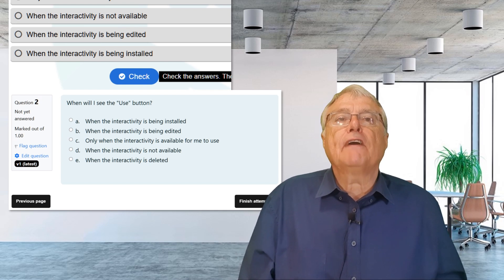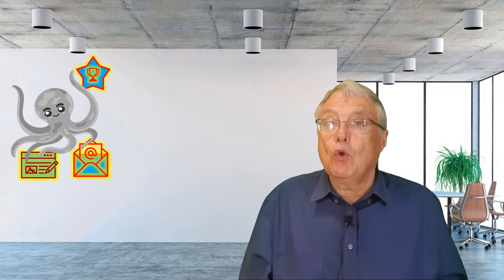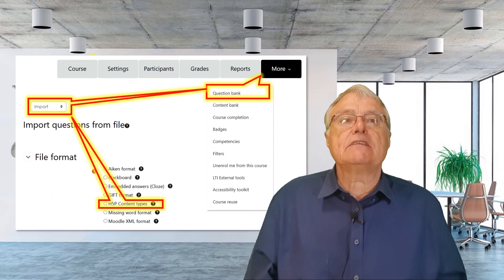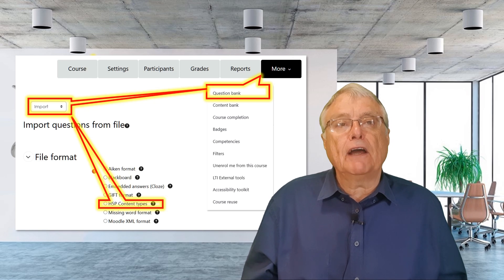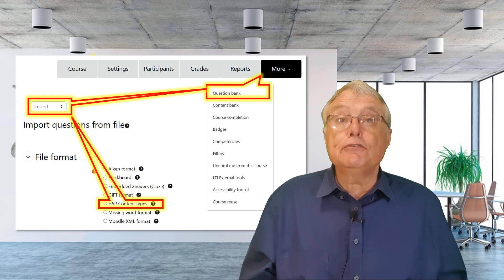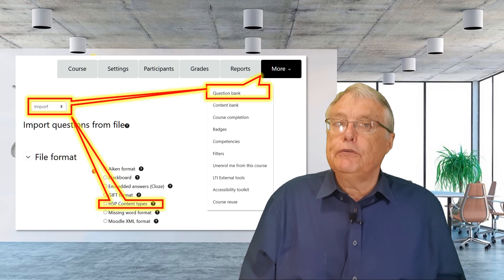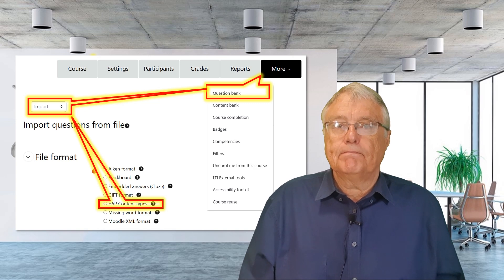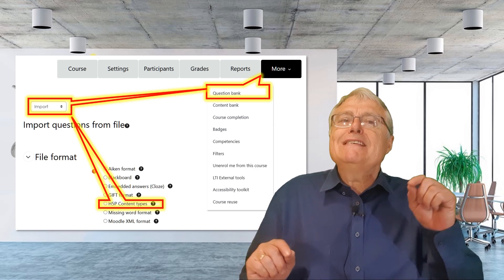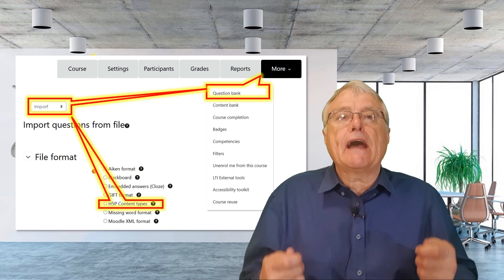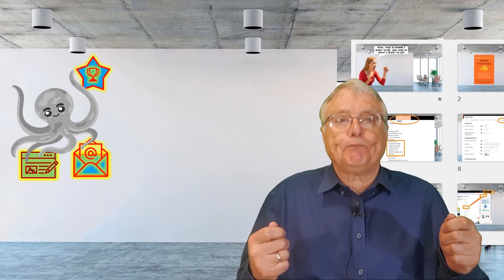Once the H5P Content Type plugin is installed, the option to import question types from H5P becomes available. It then becomes a straightforward process of uploading the H5P package file, allowing the questions used in the package to be imported directly into Moodle for use in your quizzes and assessments. Please note that only some question types import effectively, so you will have to experiment and find the optimal blend of question types that you can import.